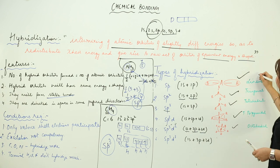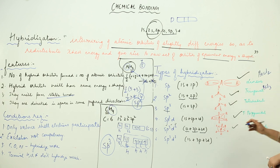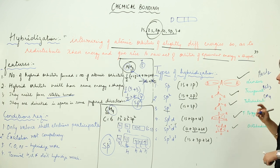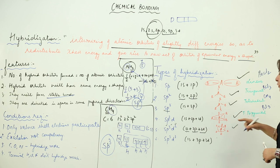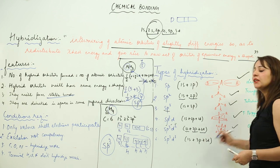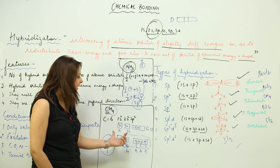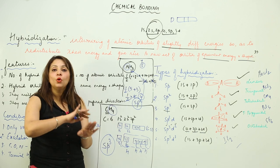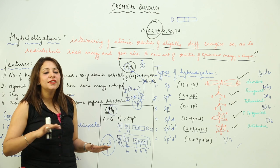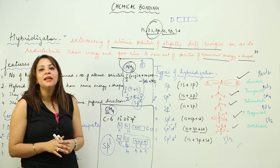Examples: sp hybridization — BeCl2; sp2 — BCl3 (boron trichloride); sp3 — CH4; sp3d — PCl5; sp3d2 — SF6; sp3d3 — IF7. To summarize: identify the central atom, write its ground state configuration, perform excitation if required (it is not always compulsory), then combine the half-filled orbitals to determine the hybridization.